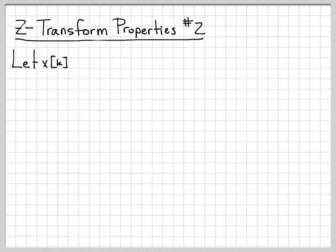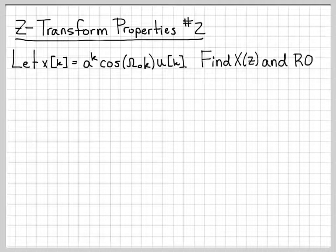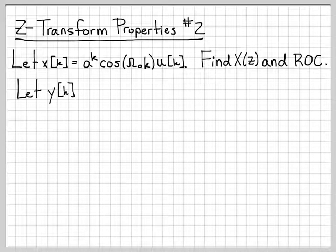In this problem, we're going to be working with the discrete-time signal x[k], which will be equal to a^k times cos(ω₀k) times u[k]. We're going to find X(z) and the region of convergence for this discrete-time signal.